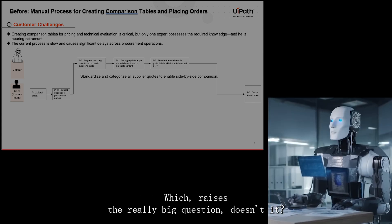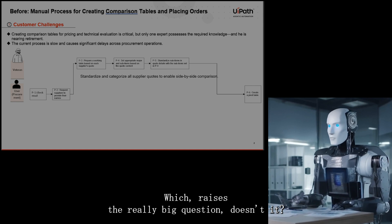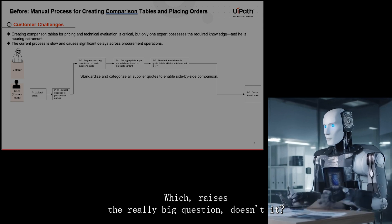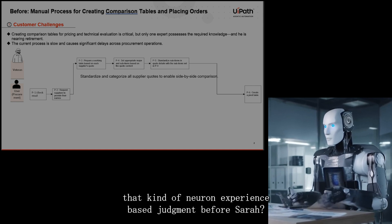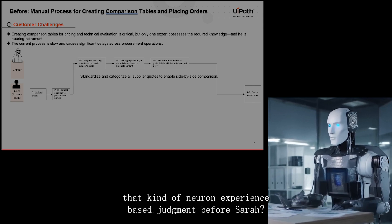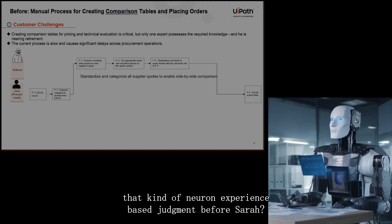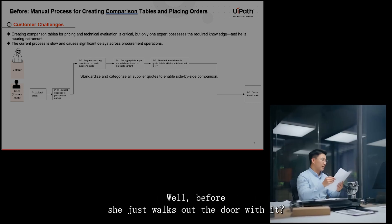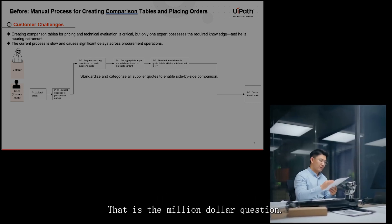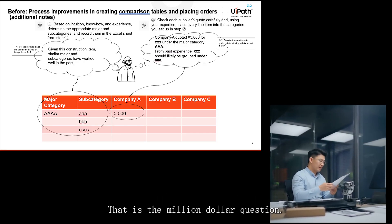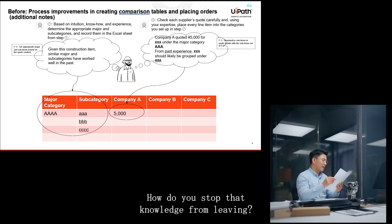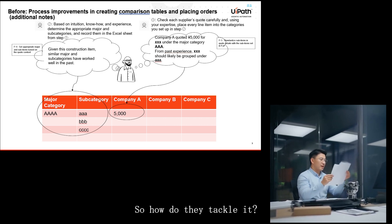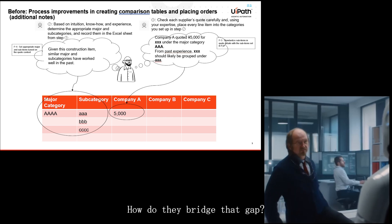Only after all that complex, intricate human work could they finally create the comparison table — the pivot table they needed. Which raises the really big question: how do you possibly capture that kind of nuanced, experience-based judgment before Sarah walks out the door with it? That is the million dollar question.